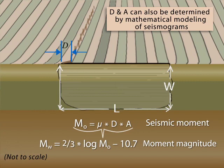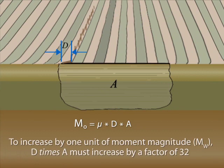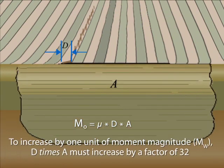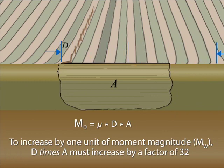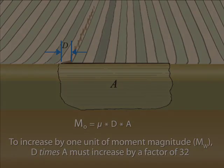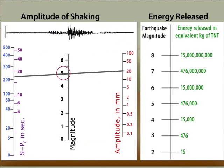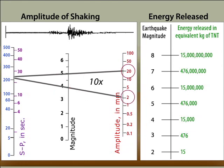To truly appreciate this, consider the changes in an earthquake rupture required to increase the moment magnitude by one unit. Either the area of rupture or the slip distance or both must increase so that the product of slip distance times area increases by a factor of 32. While the amplitude of shaking caused by a magnitude 5 earthquake is 10 times larger than for a magnitude 4 earthquake, the energy released increases by about 32 times for each unit increase in magnitude.